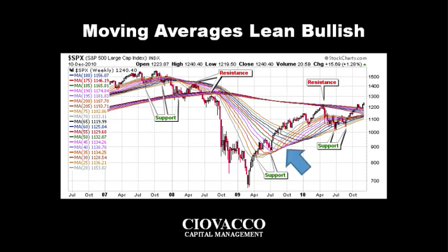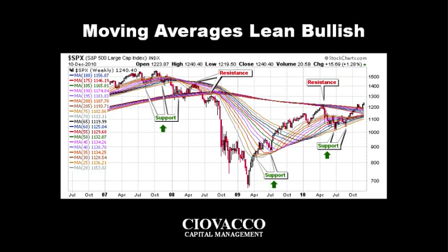We can see the shorter-term trends became favorable again in 2009. The longer-term trends, shown via the thinner band of colored lines, remain down. An important shift may be taking place as the S&P 500 moves above the upper band of long-term moving averages. Notice how these bands of moving averages acted as support in 2007, 2009, and again in 2010. Both bands of moving averages acted as resistance for the S&P 500 in 2008 and again in the spring of 2010.